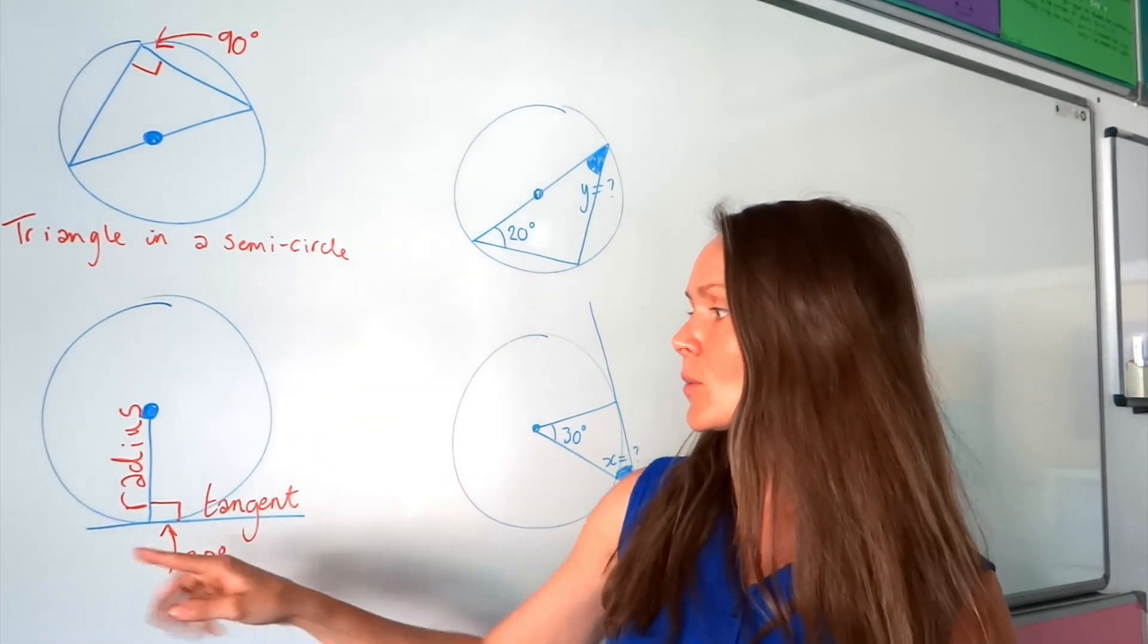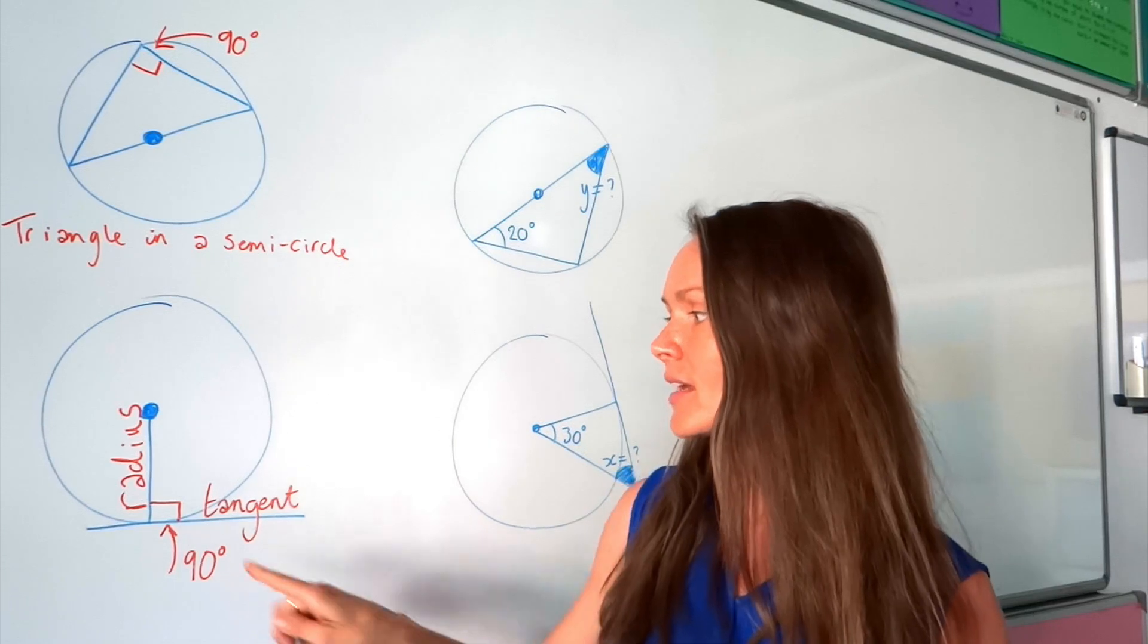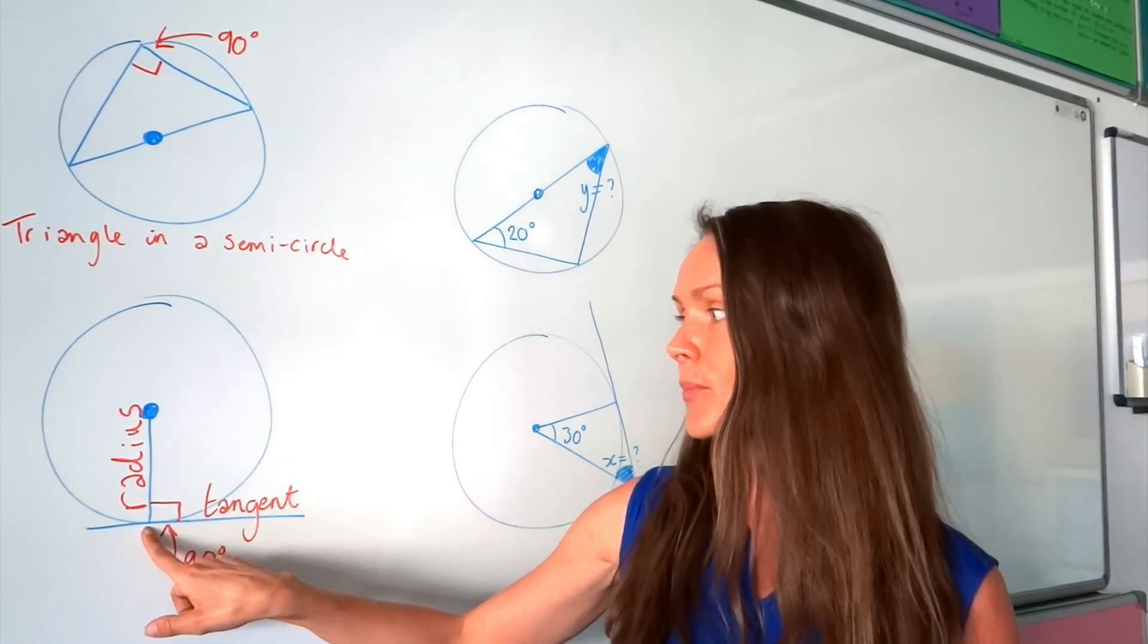The second one is this one here. So you've got a line called a tangent. So this is just a straight line that just skims, it just touches the circle here in one place.